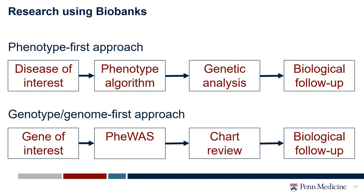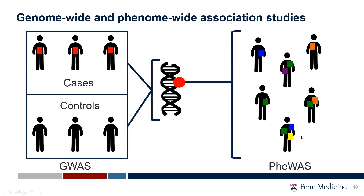There are two approaches I want you to think about. In a phenotype-first approach, we start with a disease of interest, run the genetic analysis, and then do biological follow-up. In a genotype-first approach, we start with a gene of interest or a polygenic risk score, then look to see if that's associated with various phenotypes in a phenome-wide association analysis, or PheWAS, and then do biological follow-up.